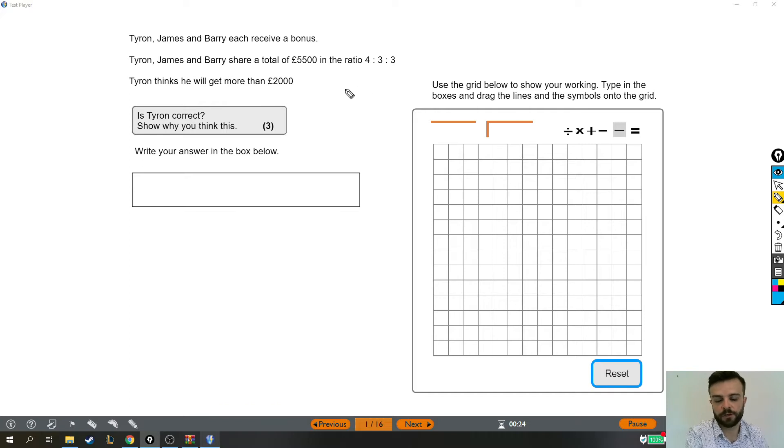So this is the type of ratio question where we're trying to share out £5,500 in this ratio. I always quite like a picture for these. 1, 2, 3, 4. Here's just a picture of the ratio that we've been given. It's 4 to 3 to 3. And because we're talking about money, we can imagine each of these circles as like a little pile of money, a little pile of cash. And we need to split £5,500 in this ratio.